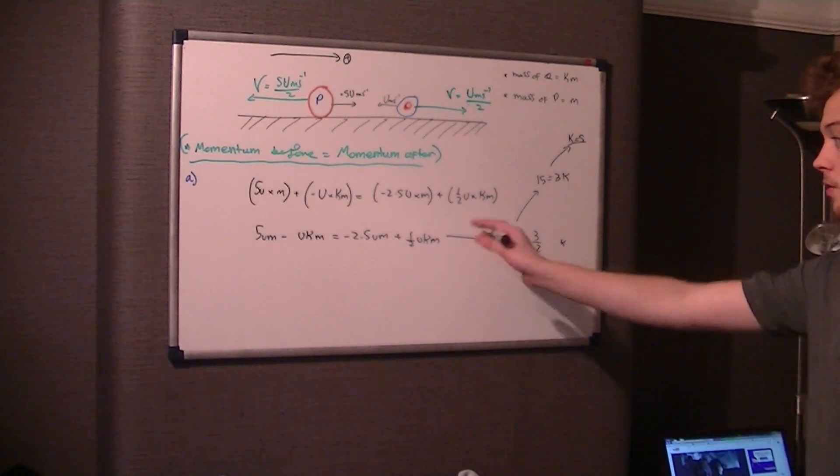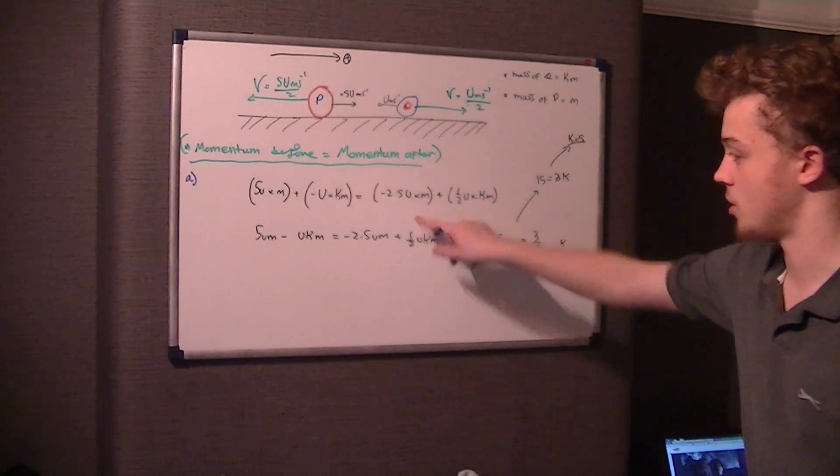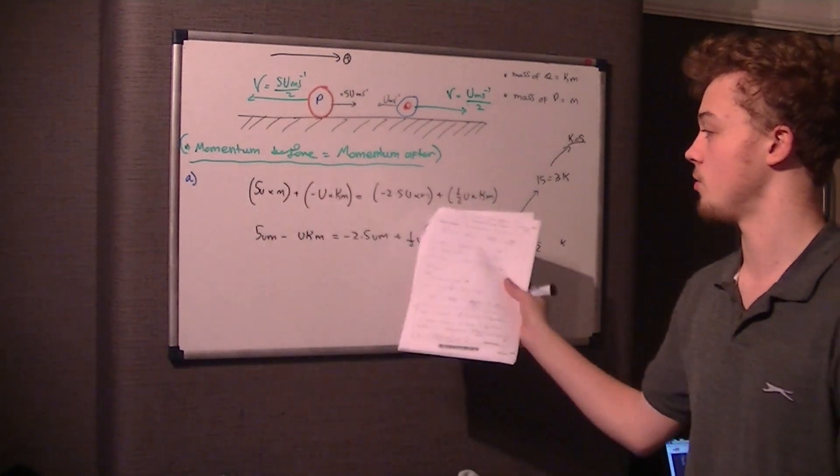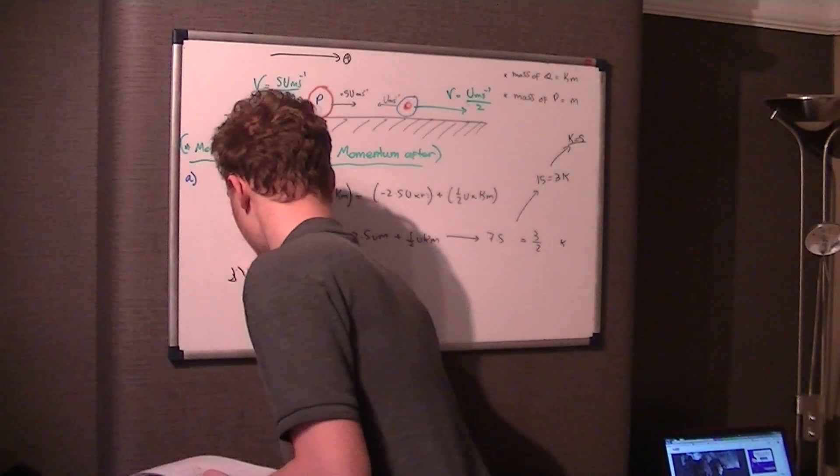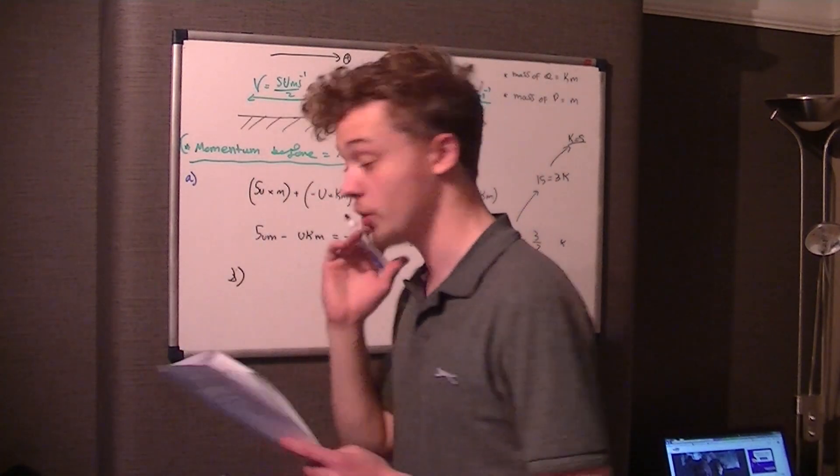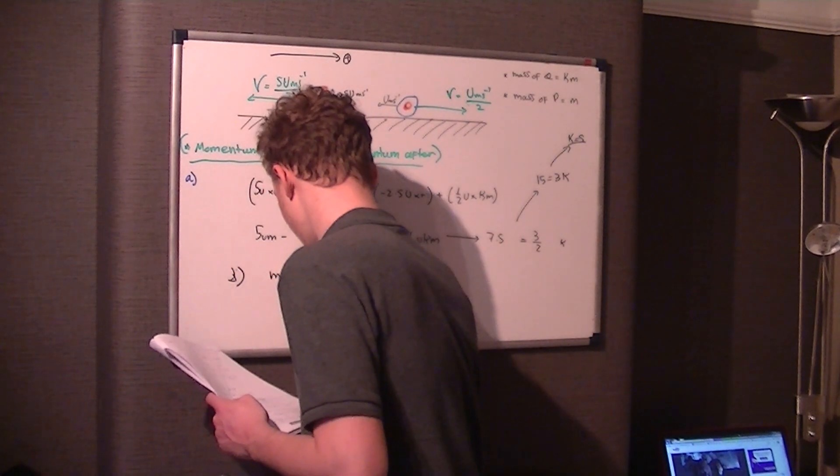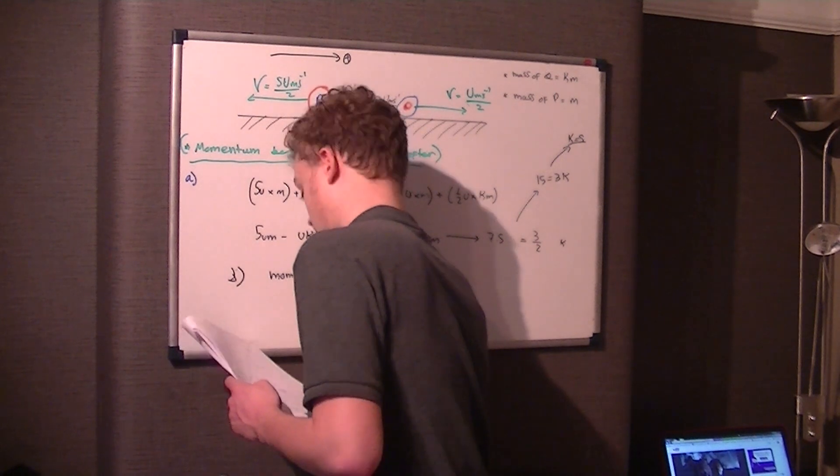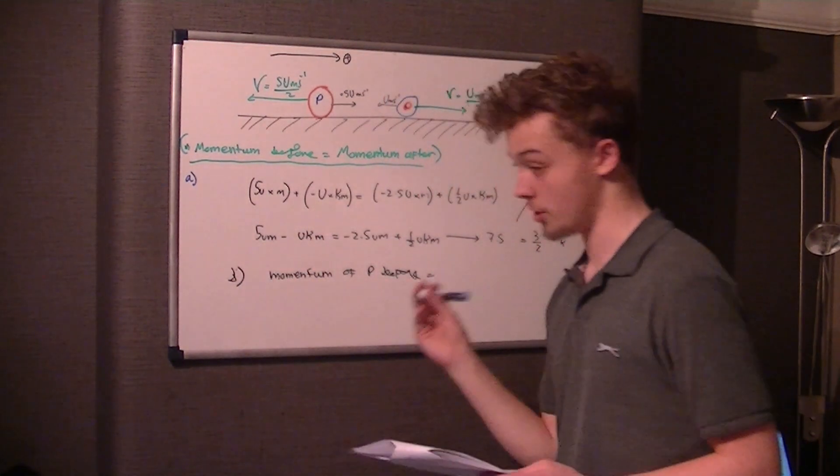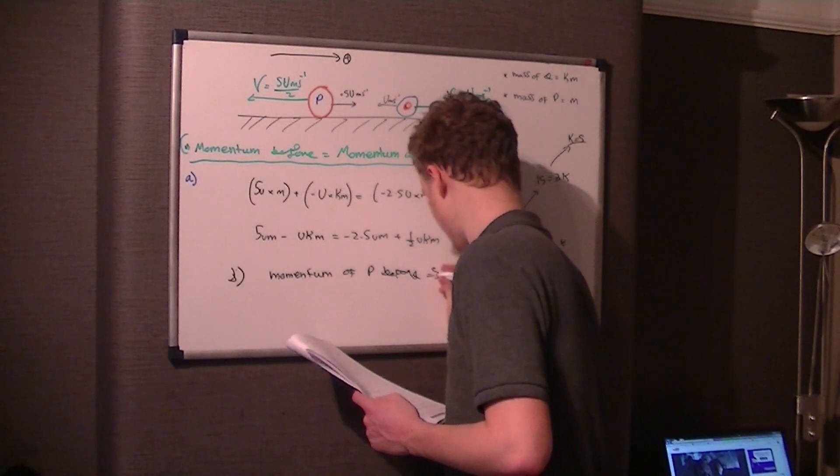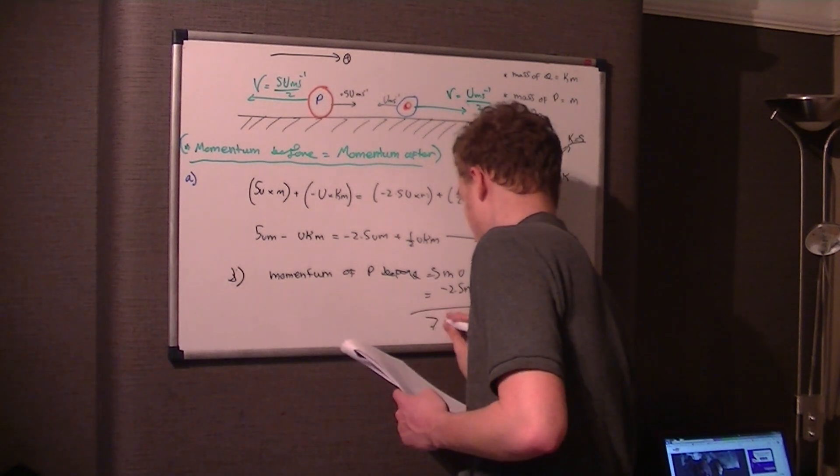So 7.5MU is the correct answer. I tried to build it up to that rather than just trying to compute it. But if you were to do that, you would just look at the momentum of P before which was 5U meters per second, momentum of P after which was negative 2.5U times M. So you work out the distance between these two which is 7.5UM and that gets you your answer. So for part B, this is how you would write it out. Momentum of P before equals 5UM, momentum of P afterwards is negative 2.5MU. So therefore you take them away from each other and you get 7.5MU.